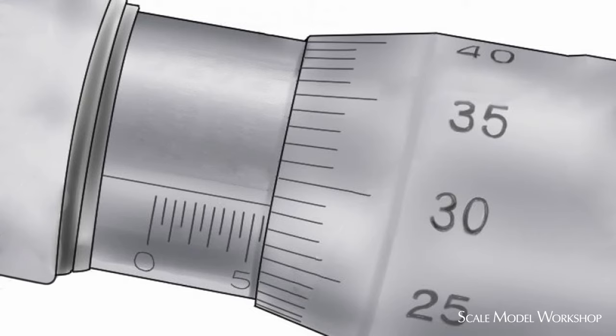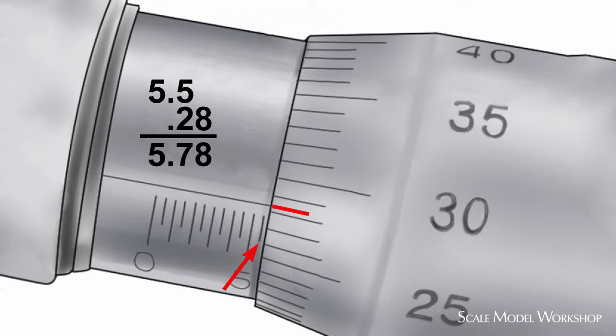The process is exactly the same with the metric micrometer. The spindle scale is marked for every half millimeter and numbered every five millimeters. The thimble is marked in one-hundredth millimeter increments and it's numbered every five hundredths. So you add the two values in exactly the same way as in the previous example with imperial units.